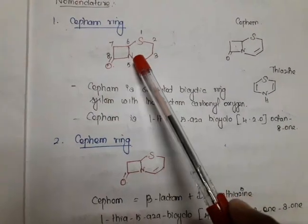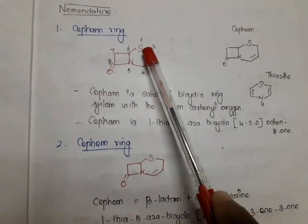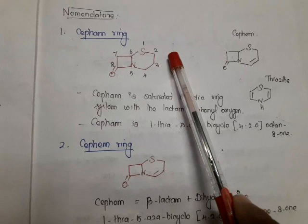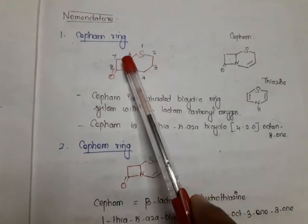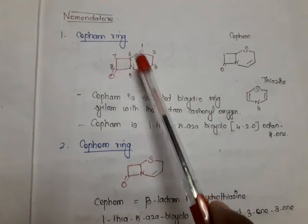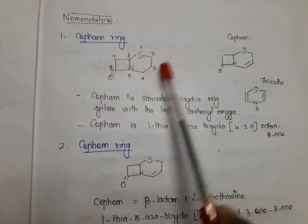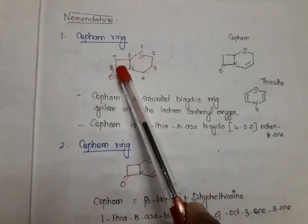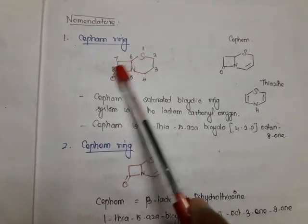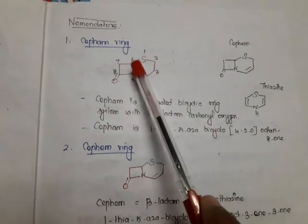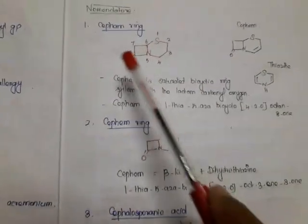Now we can tell the chemical name of cepham. Here the first position has sulfur and the fifth position has nitrogen. That's why: one-thia, five-aza, bicyclo. According to that, one end is having four groups, the other end is having two groups, and the bridge has zero — so four-two-zero. Totally eight atoms are present, that's why octane. And the eighth position is having a ketone, so eight-one. The chemical name is: 1-thia-5-azabicyclo[4.2.0]octan-8-one.